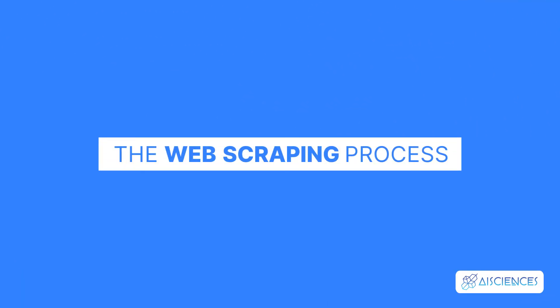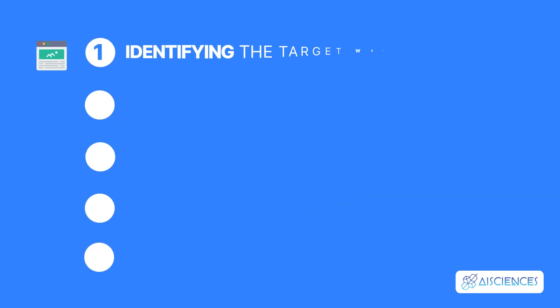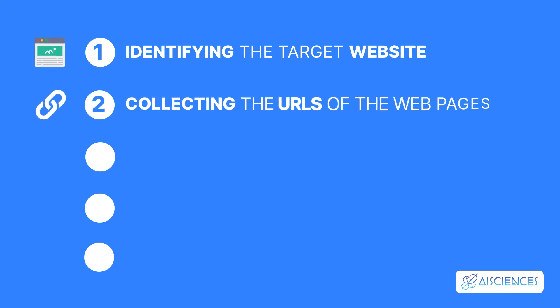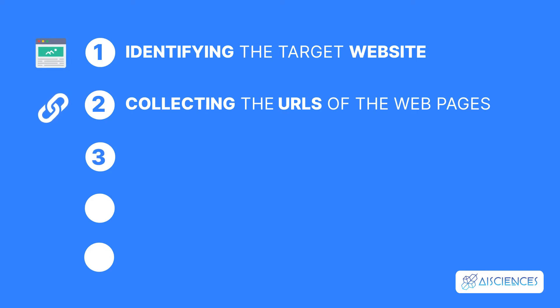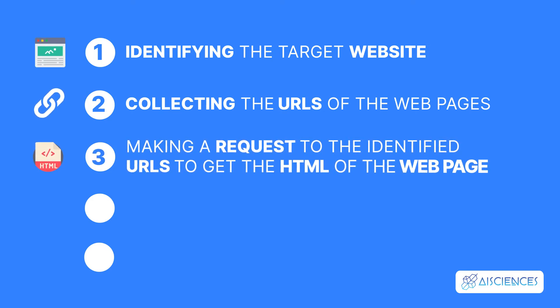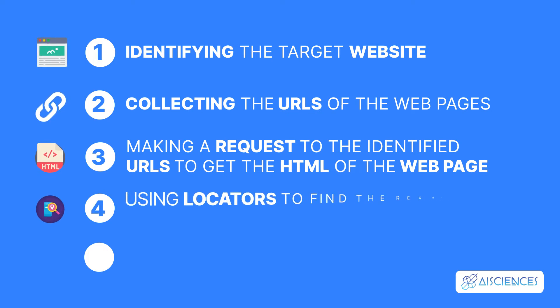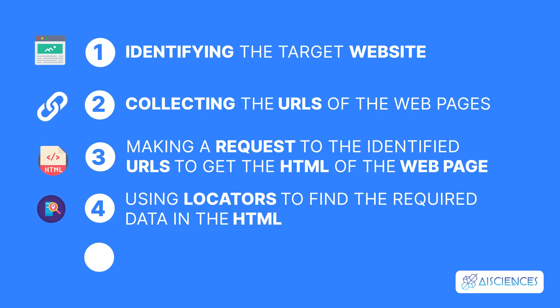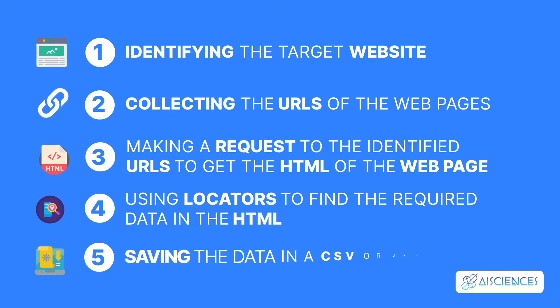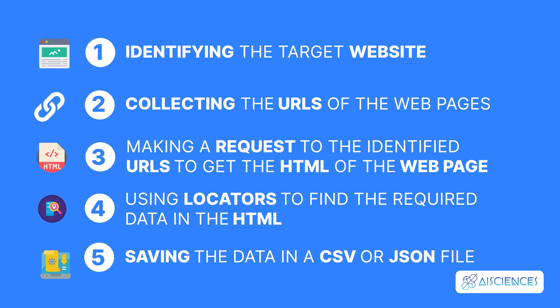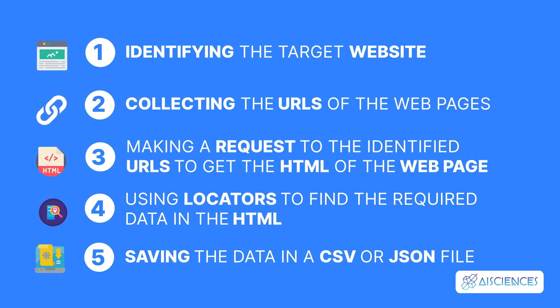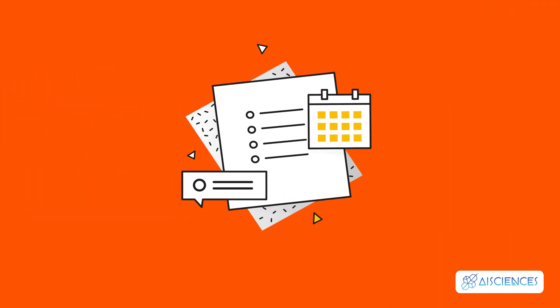Web scraping is a five-step process. These steps are: 1. Identifying the target website. 2. Collecting the URLs of the webpages from which you want to extract data. 3. Making a request to the identified URLs to get the HTML of the webpage. 4. Using locators to find the required data in the HTML. 5. Saving the data in a CSV or JSON file or any other structured format. All this does sound simple, and for a small project, it is.